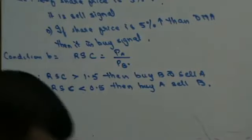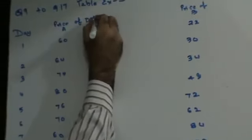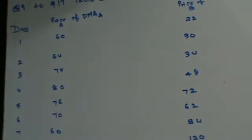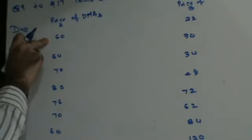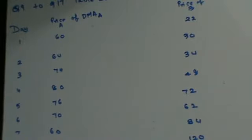Before moving to the questions, let's do some calculations. First, let's find out the daily moving average of share A. The DMA is the price on the first day plus the price on the second day divided by 2. So that will be 60 plus 64 divided by 2, which gives 62 — this is the DMA for the second day.